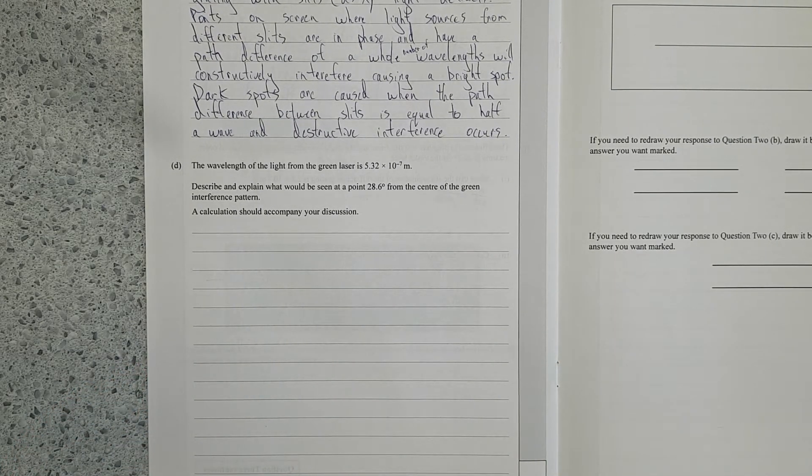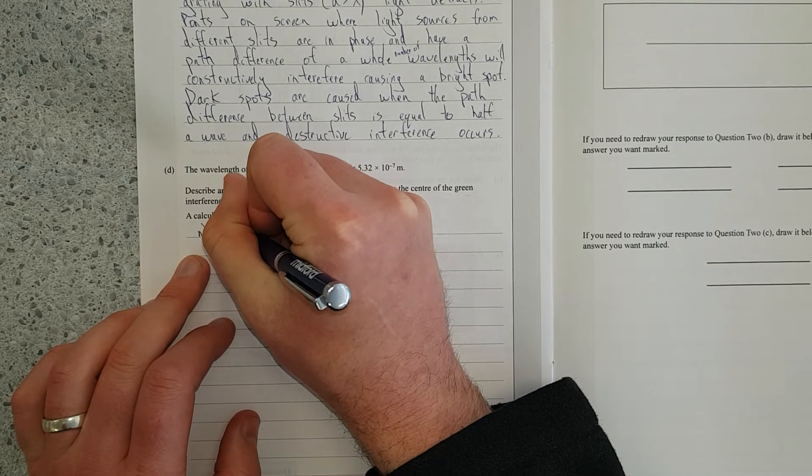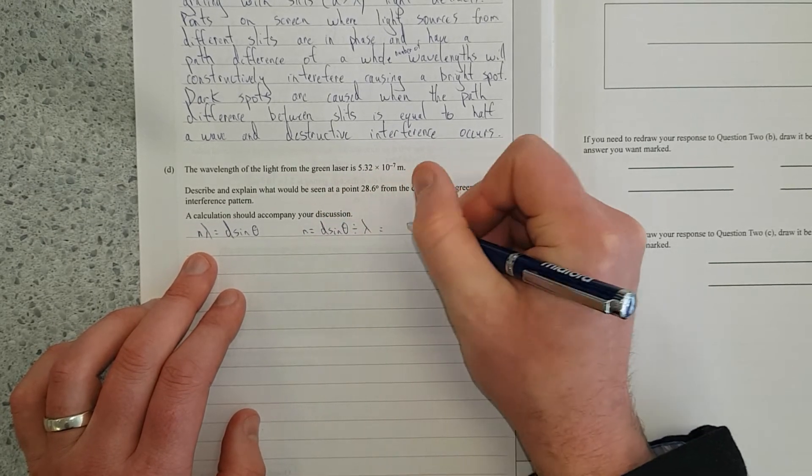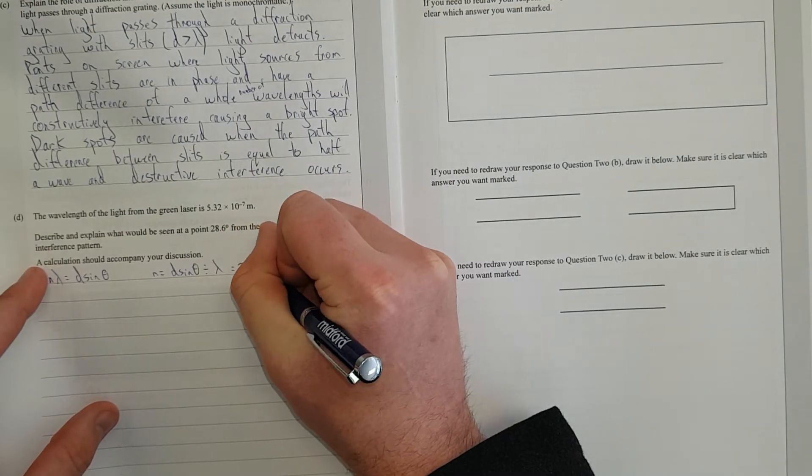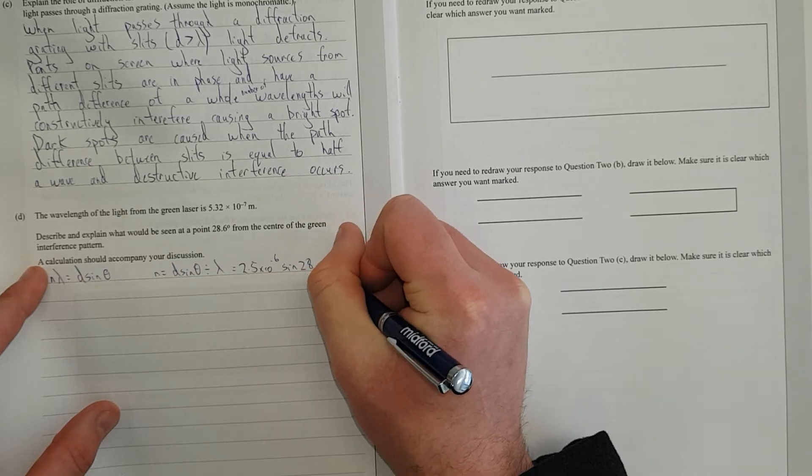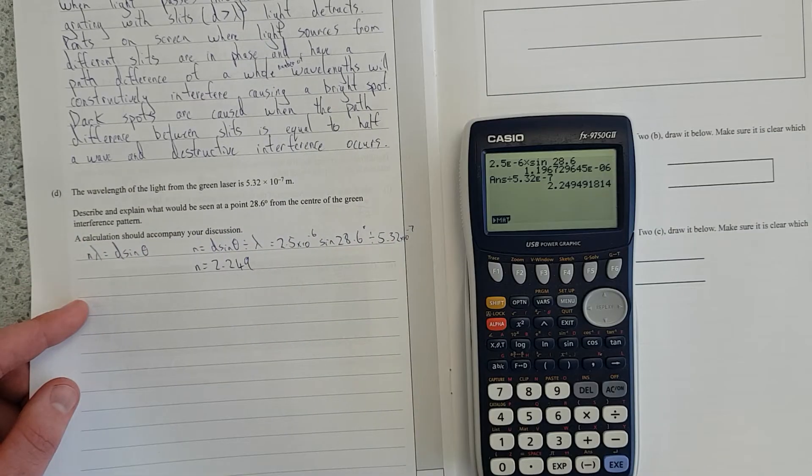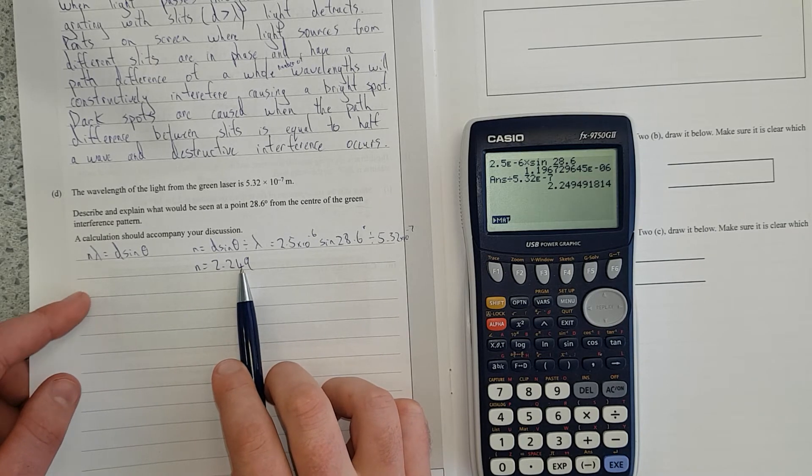Next question. The wavelength of light from a green laser is 532 nanometers. Describe and explain what will be seen at 28.6 degrees from the center of a green interference pattern. Calculation should accompany your discussion. So what we're going to do is N lambda equals d sin theta. In other words, N is equal to d sin theta divided by lambda, which is going to be equal to 2.5 times 10 to the negative 6 times sine 28.6 divided by 5.32 times 10 to the negative 7. We get 2.24.